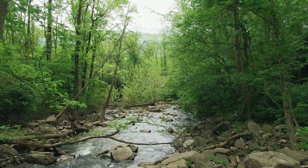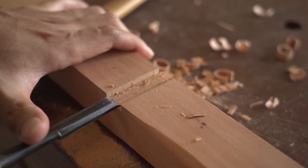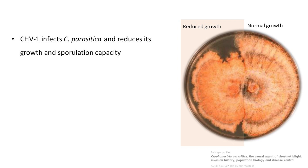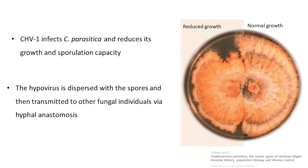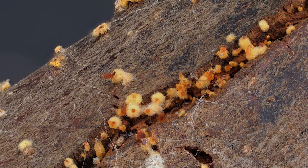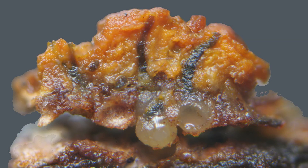An estimated 4 billion trees have been wiped out by this fungus, significantly altering forest structures and impacting the nut and lumber industries. Cryphonectria hypovirus 1, or CHV-1, infects Cryphonectria parasitica and reduces its growth, sporulation, and virulence. The hypovirus is dispersed with spores and transmitted to other fungal individuals via hyphal anastomosis. Cankers on trees can be therapeutically treated with hypovirus-infected Cryphonectria parasitica strains, and the hypovirus may subsequently spread to untreated cankers and become established in the population.